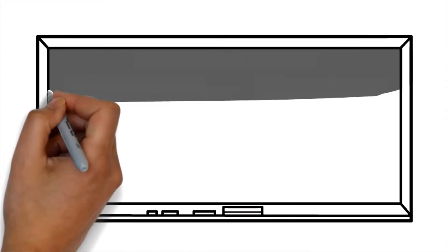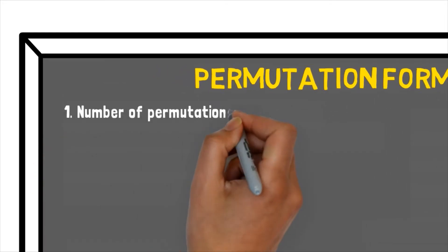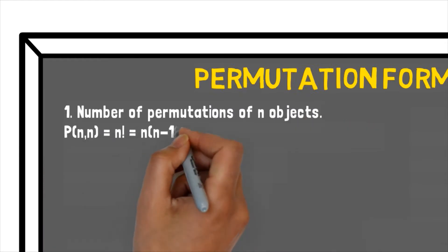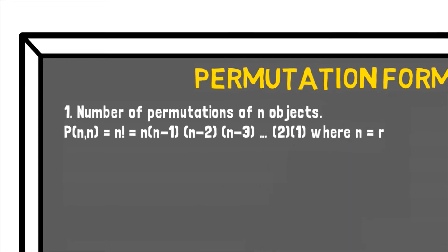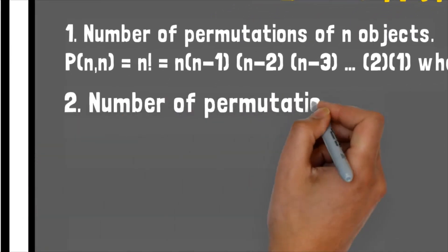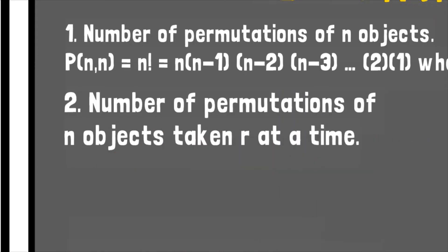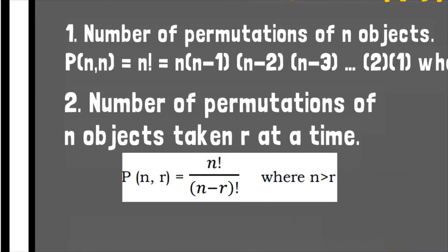Before we proceed with our illustrative examples, let us first recall the different formulas used in solving permutations and combination problems. In getting the permutations of n objects where n equals r — that is, the number of objects to choose from is the same as the number of objects chosen — we use the formula n factorial. When dealing with permutations of n objects taken r at a time where n is greater than r, we use the formula n factorial divided by (n minus r) factorial.